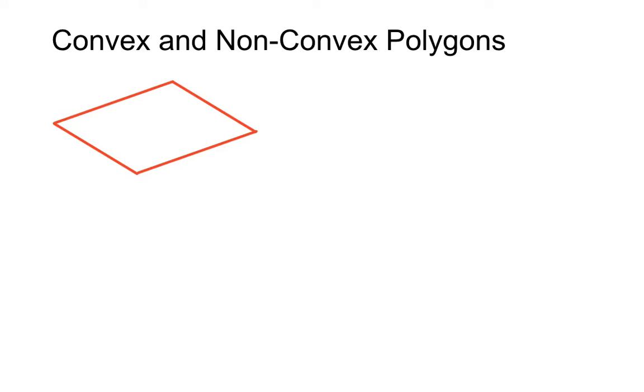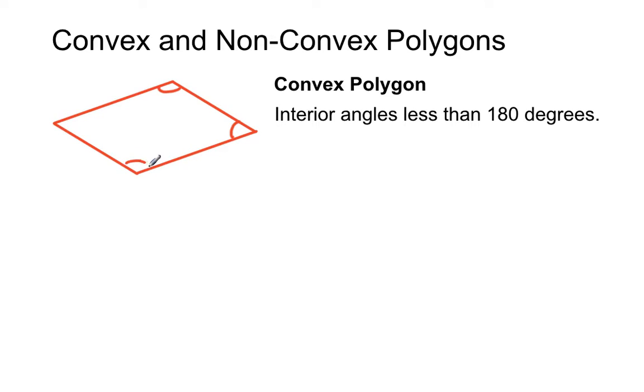Okay, so we have convex polygons. Let's have a look at that concept. We have interior angles that are less than 180 degrees. None of the interior angles in this shape here is greater than 180 degrees. None of them are greater than the straight angle, the straight line. They're all less than that, so they're acute or obtuse.